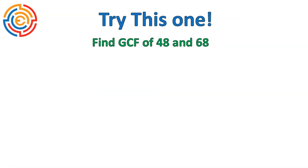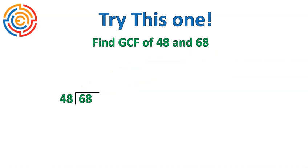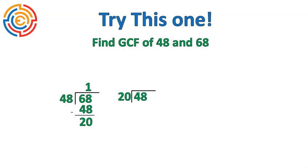Here's our next example: find the greatest common factor of 48 and 68 using this algorithm. Try it out — pause and practice. Here is the setup: put the smaller number 48 as your divisor on the outside, your larger number 68 inside, and begin. There is one group of 48 inside of 68, so we multiply and subtract. We move our remainder up and 48 goes inside — that's how we set it up.